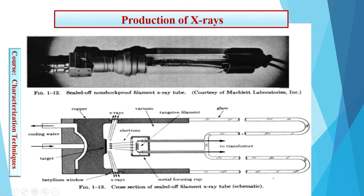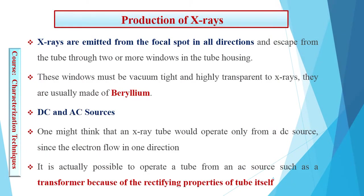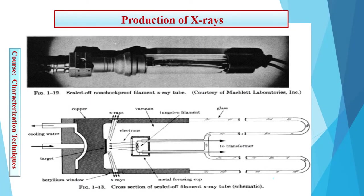From this figure, we can again see the cup at very high negative potential. Due to this potential, the electrons are focused onto a very small focal point on the target surface for the emission of X-rays. X-rays are emitted from the focal point in all directions and escape from the tube through two or more beryllium windows, which must be vacuum-tight and highly transparent to X-rays.